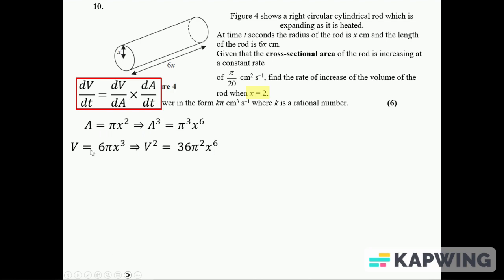Okay, if I cube this I can get x to the power of 6, and if I do the same, if I square the V though, again I get x to the power of 6. So I can sort of eliminate the x to the power of 6. The x to the power of 6 is A cubed over π cubed, or V squared over 36π squared, so they're going to be equal to each other.